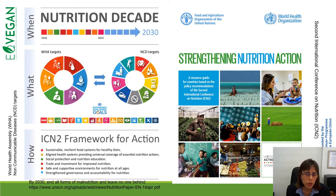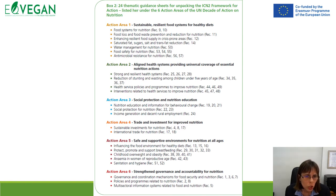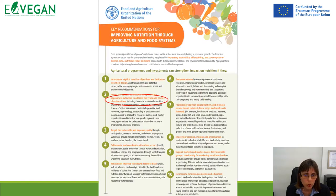In the nutrition decade, it is important to have different frameworks and to act to assure that every person on the planet can have affordable and nutritious food. Action areas include: sustainable food systems design for healthy diets, health systems providing universal coverage of essential nutrition action, social protection and nutrition education, enforcing trade and investment for improved nutrition, and assuring safe and supportive environments for nutrition at all ages.